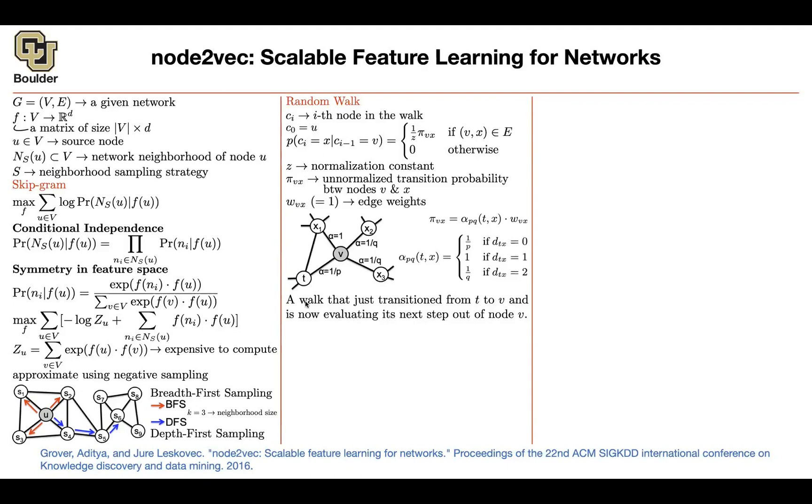Let's say in your walk, you just transitioned from T to V. So this is the step that you took. You transitioned from T to V. Now you're at V and you're evaluating, should I go back? Should I go to X1? Should I go to X2? Should I go to X3?